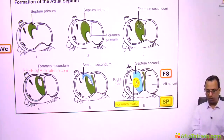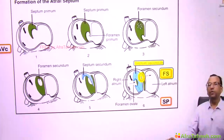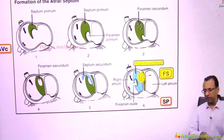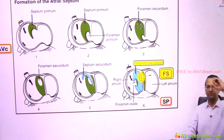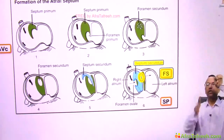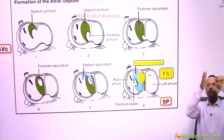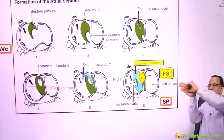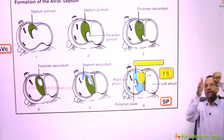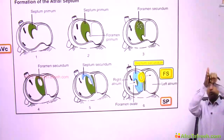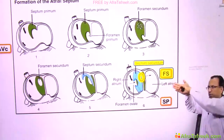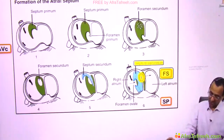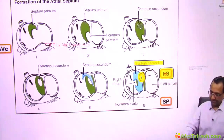What about the upper foramen? That is the foramen secundum. This foramen secundum, which is the upper foramen, will approximate on the right-sided septum — the septum secundum — and close. So foramen secundum fuses with septum secundum and closes. The vestigial remnant of the foramen ovale is called fossa ovalis. The limbus fossa ovalis is the thickened margin around the fossa ovalis, seen from the right atrium, and it is on the right-sided septum — the septum secundum.